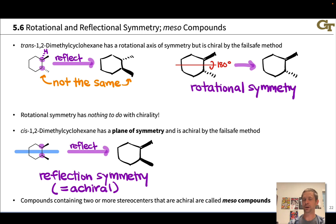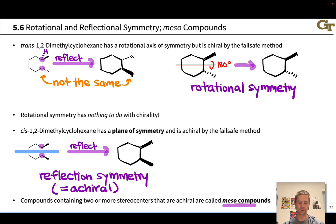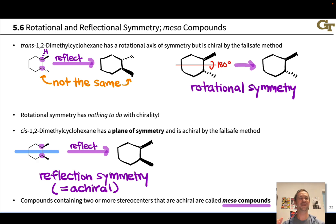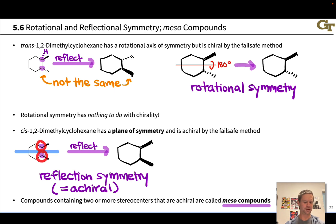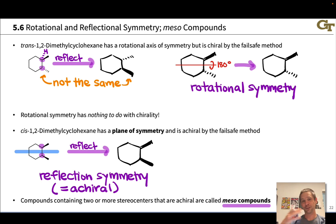Compounds that have two or more stereocenters but are nonetheless achiral because the groups at the stereocenters are symmetrically disposed — like these methyl groups — are known as meso compounds. Meso compounds are the reason I don't love the term 'chiral center' or 'chirality center.' These stereocenters are stereocenters, but the molecule as a whole is not chiral. The presence of a so-called chirality center in a molecule is not sufficient evidence to show that the compound is chiral. This has two so-called chiral centers but is nonetheless achiral due to its reflection symmetry.